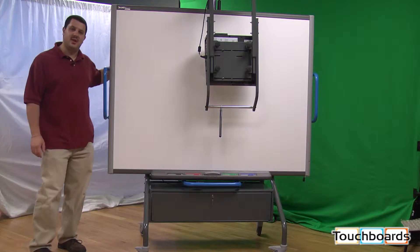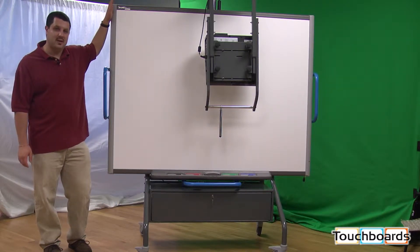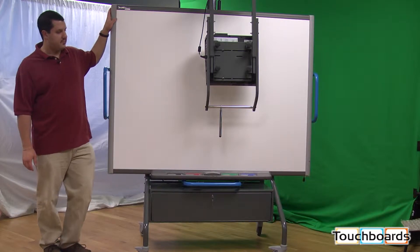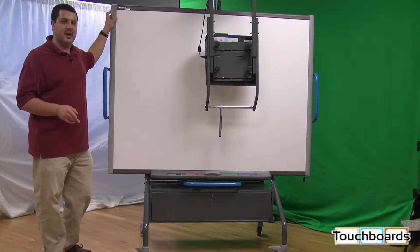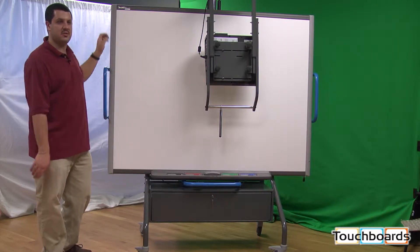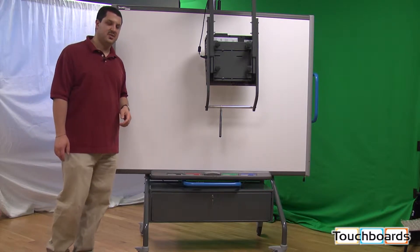Right now the iRover stand only works with the Smart Brand Interactive Whiteboard, and this here is a smart model SB680. It also works with two projectors: the Hitachi CPA series of super close projectors and the Epson 450W projector.